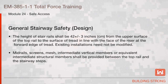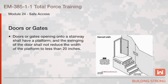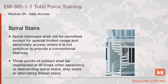The height of stair rails shall be 42 plus or minus 3 inches from the upper surface of the top rail to the surface of the tread in line with the face of the riser at the forward edge of the tread. Existing installations do not need to be modified. Mid-rails, screens, mesh, intermediate vertical members, or equivalent intermediate structural members shall be provided between the top rail and the stairway steps. Doors or gates opening onto a stairway shall have a platform, and swinging of the door shall not reduce the width of the platform to less than 20 inches. Spiral stairways shall not be permitted except for special limited usage and secondary access where it is not practical to provide a conventional stairway. Three points of contact shall be maintained at all times when ascending or descending spiral stairs, ship stairs, or alternating tread stairs.